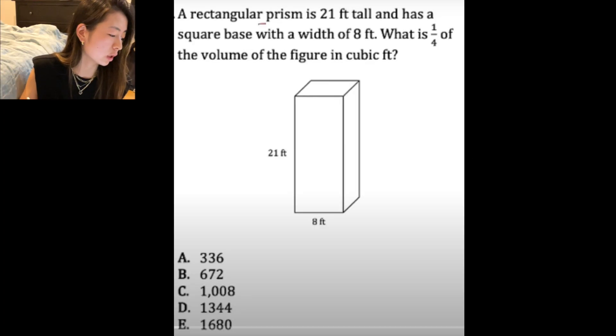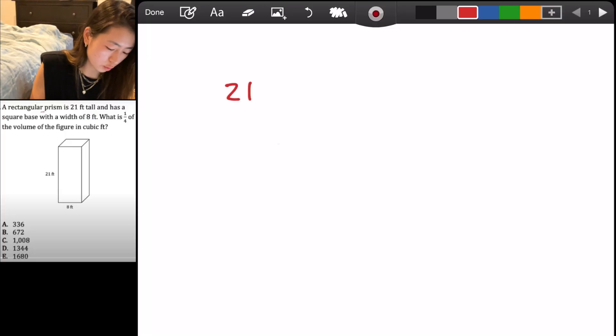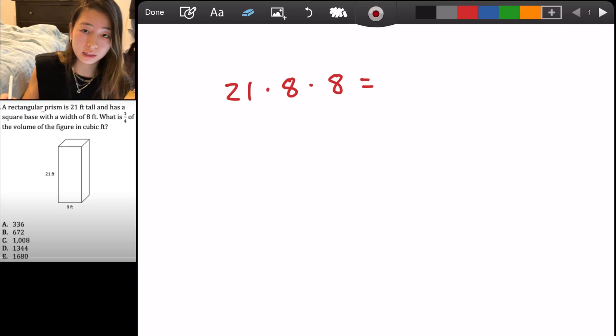In this problem, a rectangular prism is 21 feet tall and has a square base with a width of 8 feet. What is 1 fourth of the volume of the figure in cubic feet? The volume is going to be 21 times 8 times 8 because the bottom is a square, right? So instead of already multiplying this out to get whatever it is, you already know that you want to get 1 fourth of this whole thing.